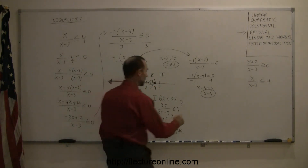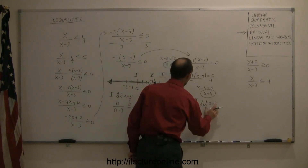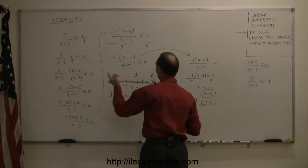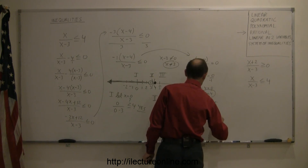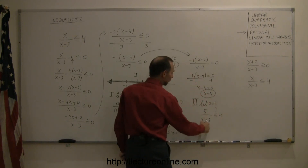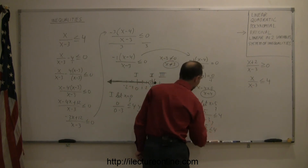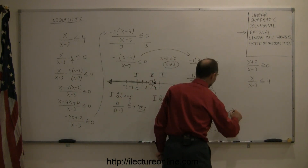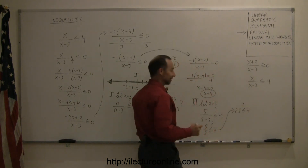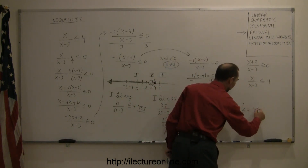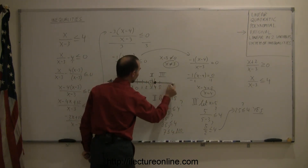Finally, for region 3, we let x equal 5. Plugging back into the original inequality: 5 divided by 5 minus 3 — is that less than or equal to 4? 5 minus 3 is 2, so 5 divided by 2, less than or equal to 4? 5 divided by 2 is 2.5, so is 2.5 less than or equal to 4? The answer is yes. That means any value to the right of 4, in region 3, is also part of the solution.